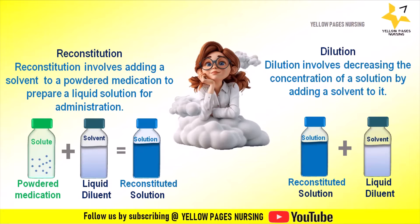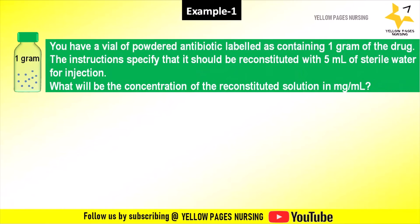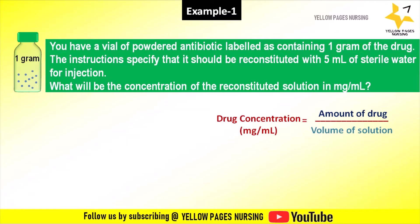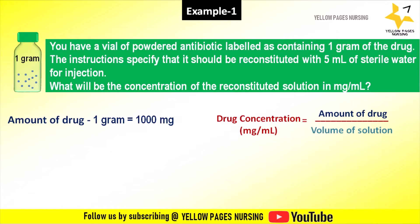While discussing the examples we will get a clear idea. Let's start with the first example: you have a vial of powdered antibiotic labeled as containing one gram of the drug. The instructions specify that it should be reconstituted with 5 ml of sterile water for injection. What will be the concentration of the reconstituted solution in milligram per ml? The formula is: drug concentration (mg/ml) = amount of drug divided by volume of solution.